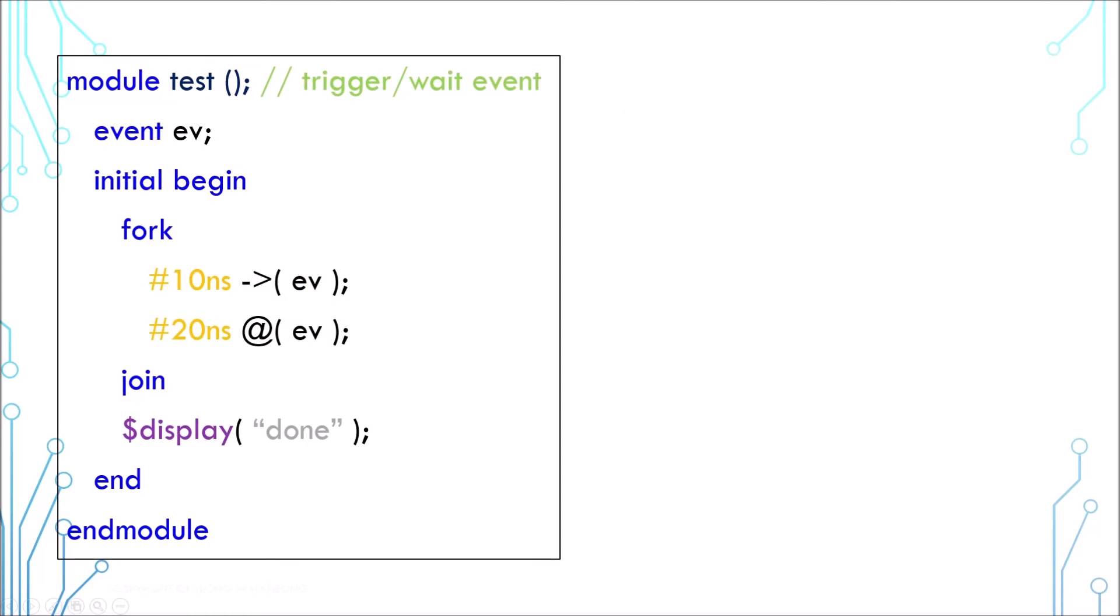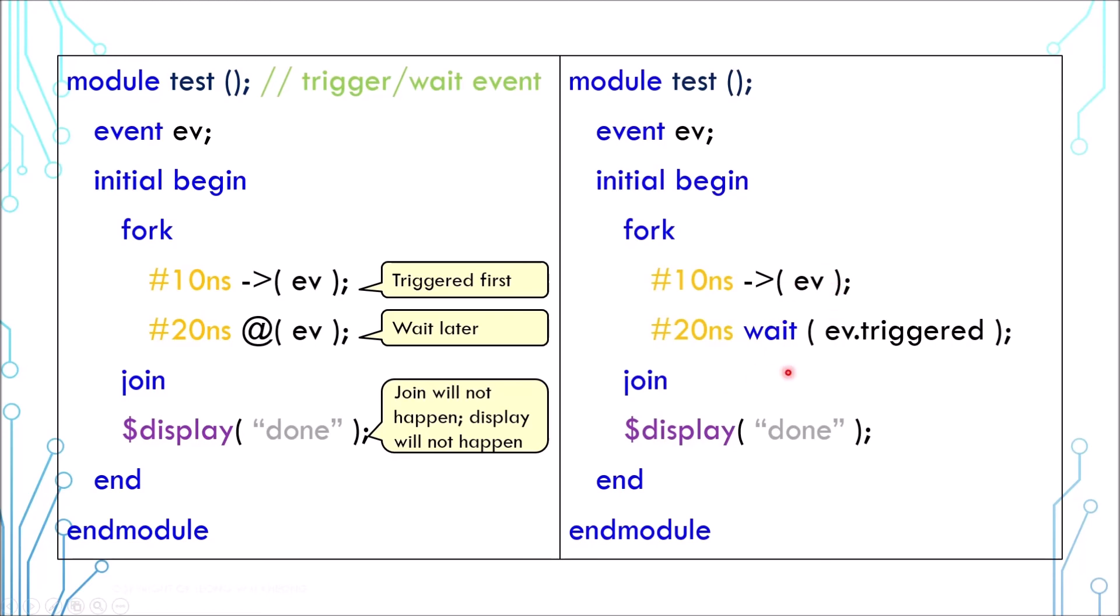Now let's take a look at this example. There is one event and there are two threads: one is triggering the event and the other is waiting for the event. In this example, the trigger happens first and the waiting or blocking happens next. The blocking will never see the event triggered, and as a result, the join will never happen and thus the display will never happen. Same thing happens if we use a wait statement.